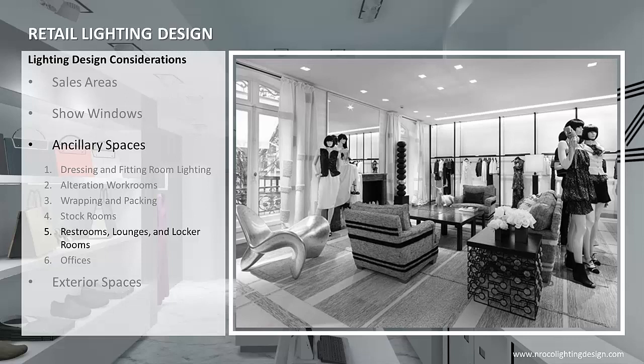Lounge lighting should include task illumination for reading and mirror lighting where appropriate. Luminaires should be located to provide enough light in the vicinity of mirrors for adequate illumination of the face. In public lavatories, visual tasks include grooming, which requires shadowless illumination on both sides of the face. Color rendering is important, and luminaires should be located so their maximum light output is concentrated in sink, urinal, and toilet stall areas to encourage cleanliness. The lighting of locker rooms should allow safe movement about the room.